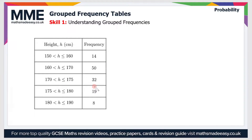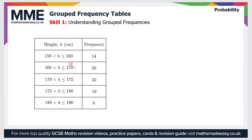Welcome to the Maths Made Easy tutorial on grouped frequency tables. Grouped frequency tables are essentially the same as other frequency tables, except this time we're dealing with grouped data. So why might we group the data? Well, if we've got a large spread of data over a large range of values — for instance, a height ranging from 150 to 190 centimeters — then it helps to condense the data if we group it all together.